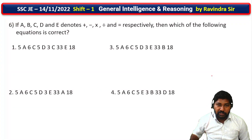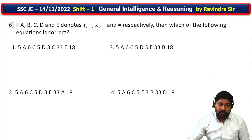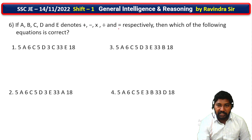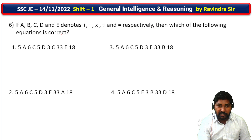Next — sixth question. If A, B, C, D, E denotes plus, minus, into, division, and equal to respectively — which of the following equations is correct?